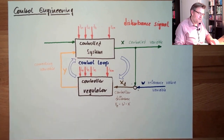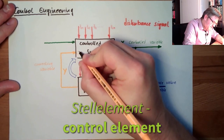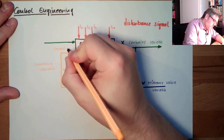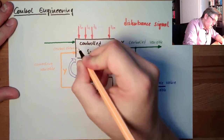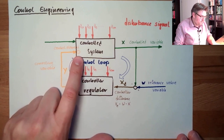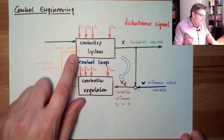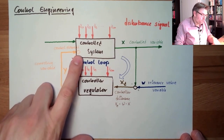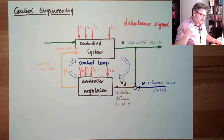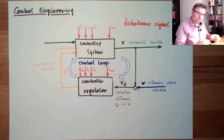This correcting variable is related to the control element. The control element is influencing the controlled variable — this might, for instance, be some sort of valve, or a heater, something like this — where the correcting variable is adjusting something with the control element, and the control element is then changing the controlled variable. It is exactly the item inside the control system which is influencing the controlled variable.